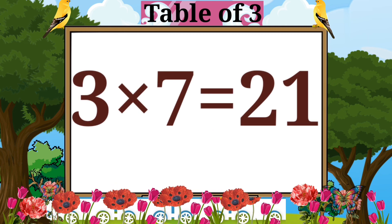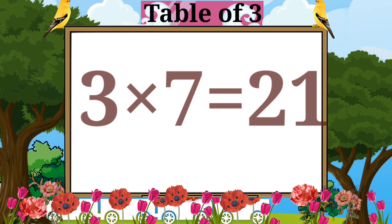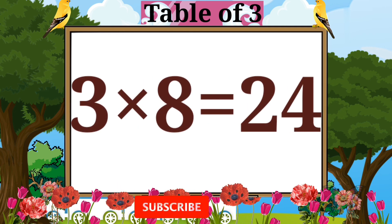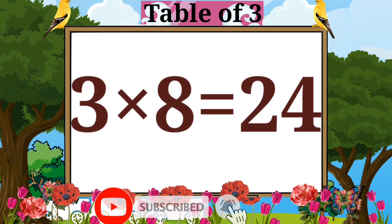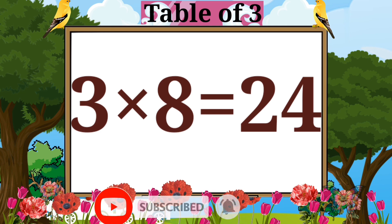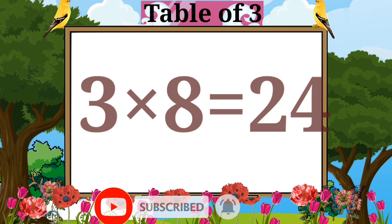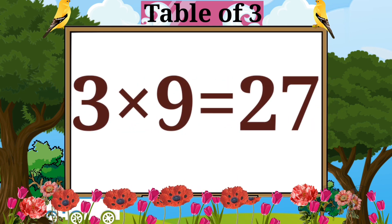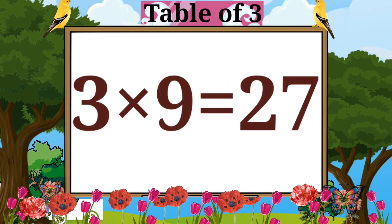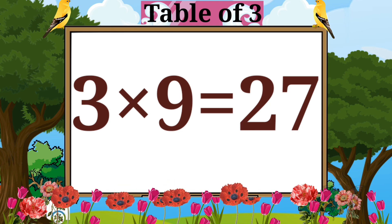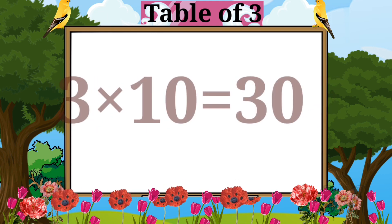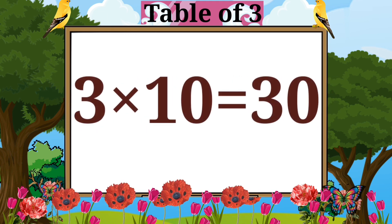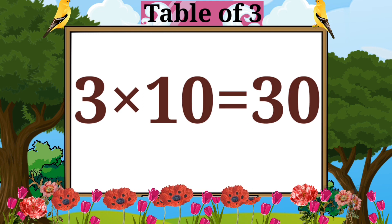Three sevens are twenty-one. Three eights are twenty-four. Three nines are twenty-seven. Three tens are thirty.